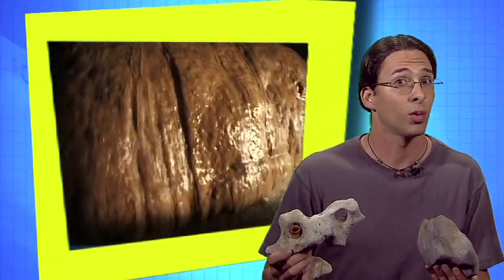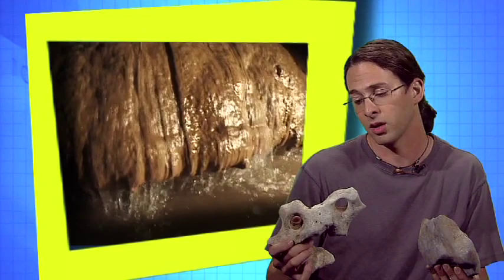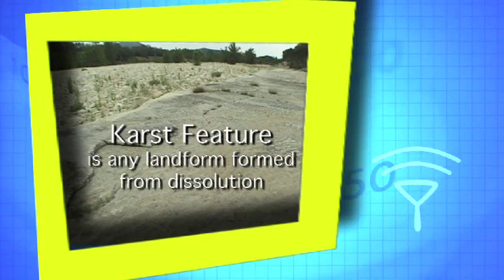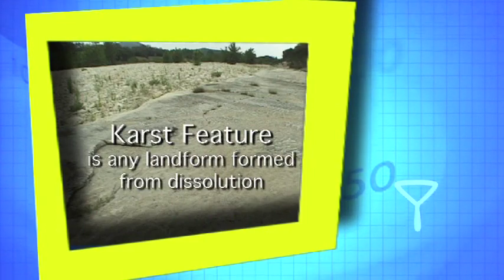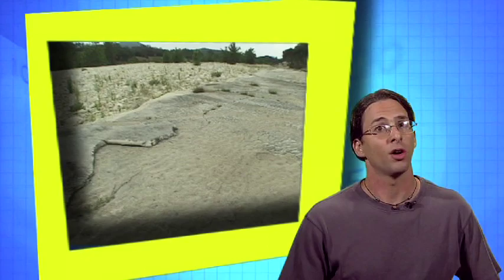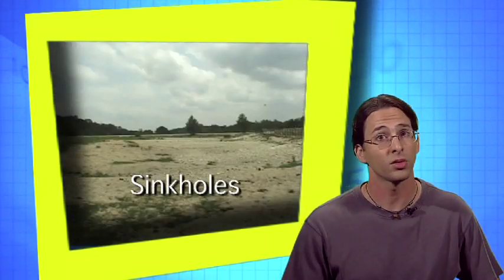This is what karst rock looks like underground. These holes are formed by the continual dissolution of the limestone bedrock by acidic rainwater. Compared to the sand aquifer we made, water can travel through this rock pretty fast. How do we know that dissolution is going on underground? We have a number of karst features exposed at the surface that we can learn from. A karst feature is any landform formed from dissolution.